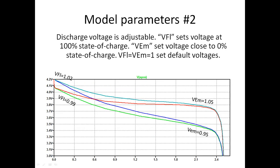Then we can adjust the initial voltage and the almost-empty voltage. We have two parameters: VFL (voltage at full condition) and VEM (voltage at empty condition). When we set parameter 1 we get the original curve, but we can set 1.02 to slightly increase voltage or 0.9 to slightly decrease voltage. Importantly, VFL and VEM can be adjusted independently of each other.